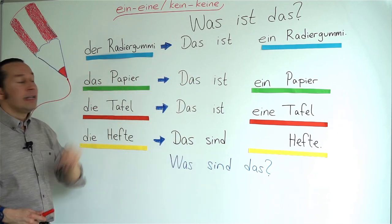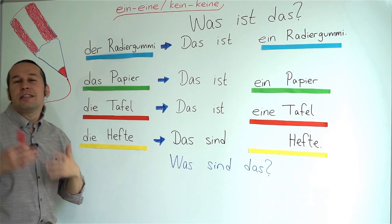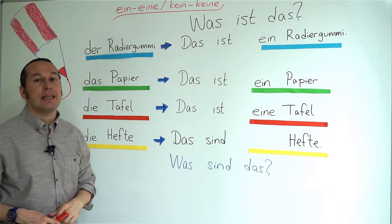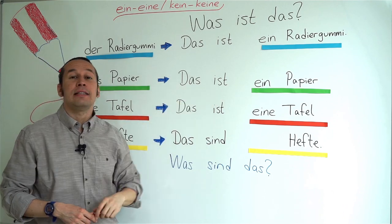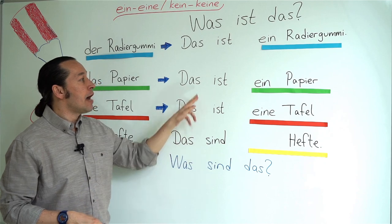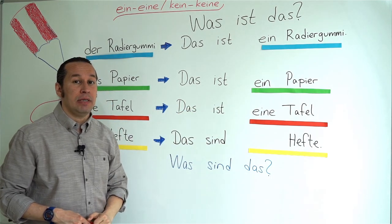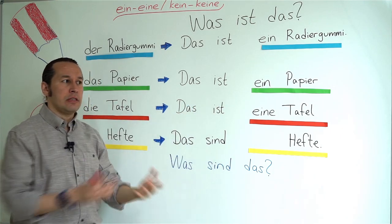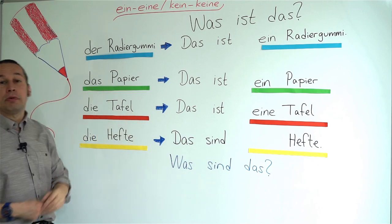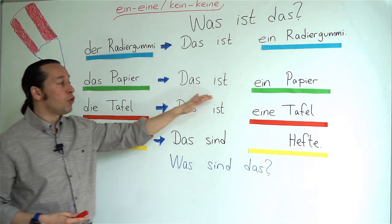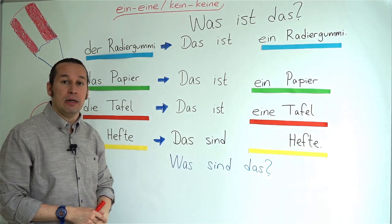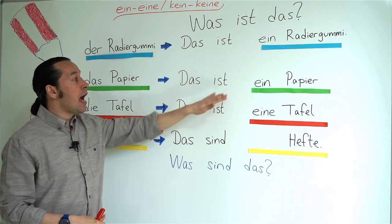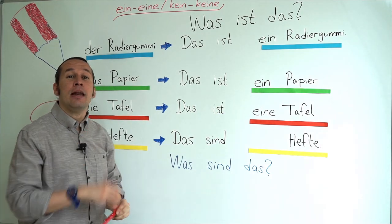In the next example we have das Papier — similar to English: paper. So when I say 'this is a paper': Das ist ein Papier. If it's a certain kind of paper, I put the article 'das': Das ist das Papier — this is the paper. But for 'a paper': Das ist ein Papier. Next, die Tafel — which stands for blackboard or board. Because the article is 'die', this turns into 'eine': Das ist eine Tafel — this is a board or blackboard. For the specific one: Das ist die Tafel.